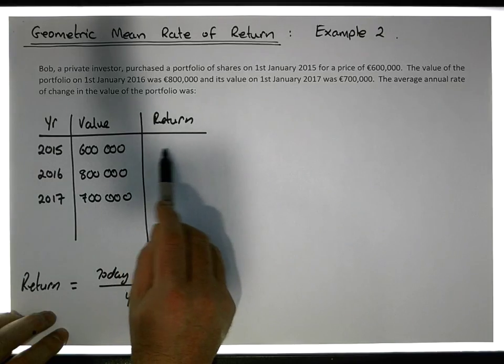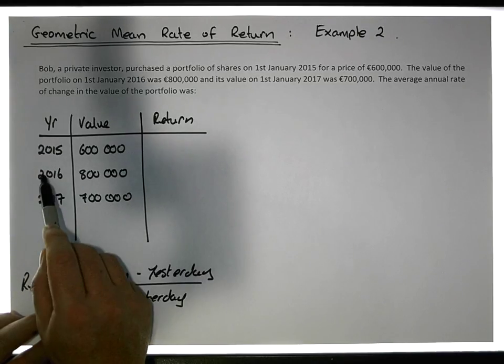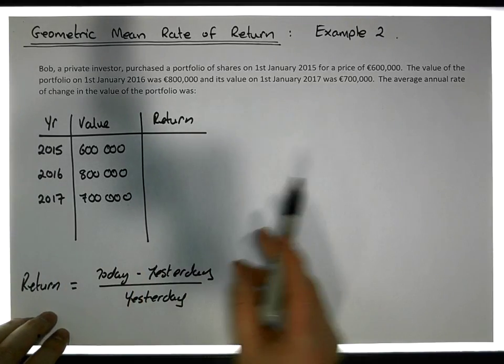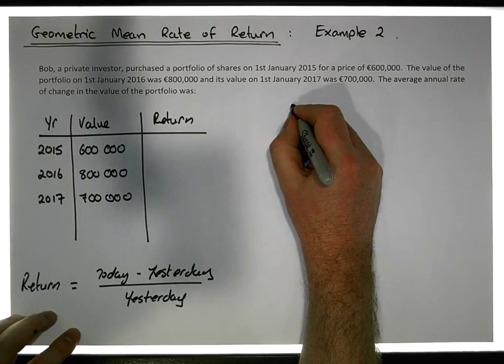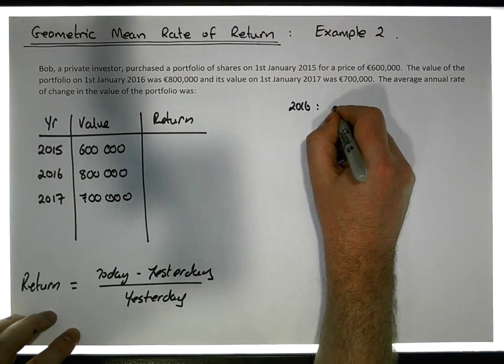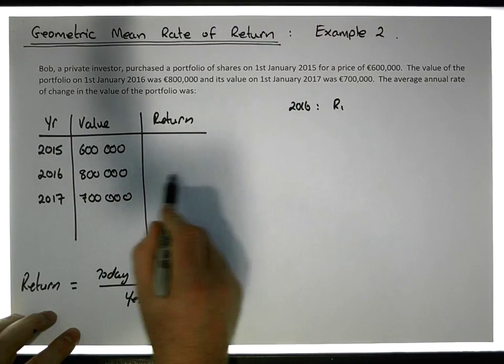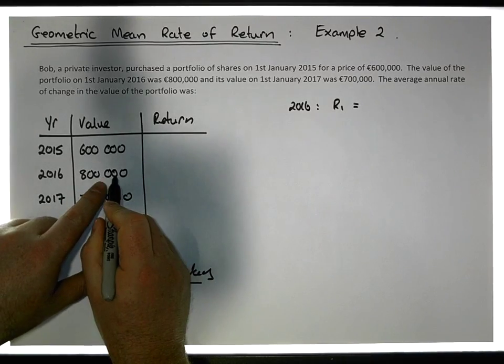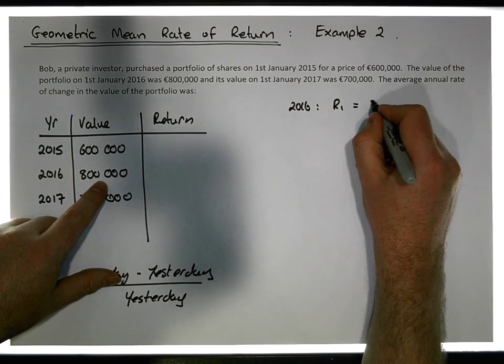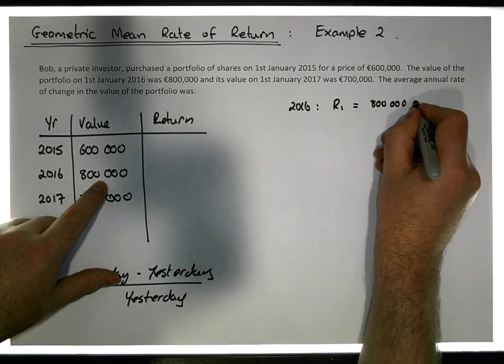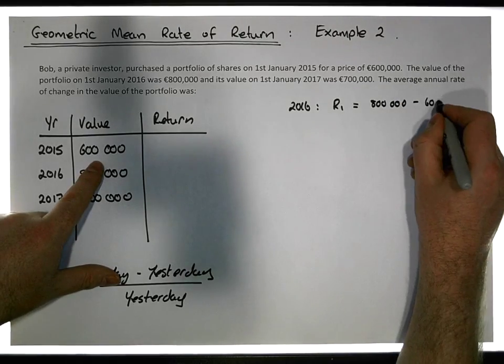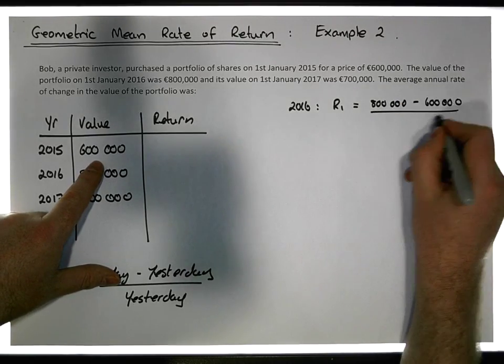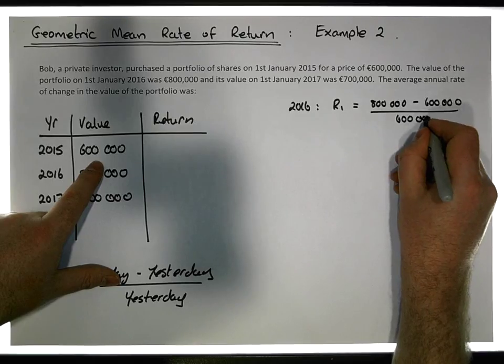We can calculate the return for 2016. Let's call this R1. The return for 2016 is going to equal today, we're in 2016, so it's 800,000 euros, minus yesterday which is 600,000, relative to yesterday which is 600,000.